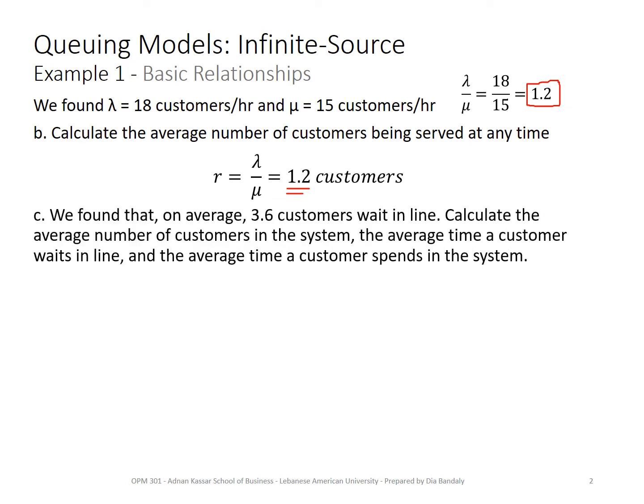Here we are given that on average 3.6 customers wait in line. What's that? This is Lq, because 3.6 wait in line, so this is Lq. It's given to us, and we want to find the following. We need to find the number of customers in the system, and this is Ls. Using the basic relationship, Ls is Lq plus lambda over mu. So that's 3.6, which is given, 1.2 we just got it before, and 4.8 customers.